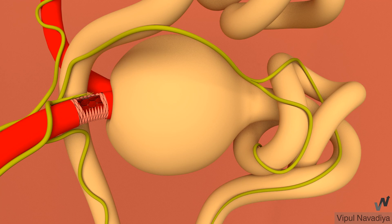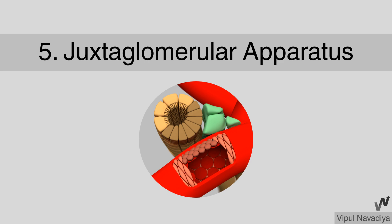So that was the nerve supply — that's it for this video. In the next video, we will see the juxtaglomerular apparatus. Thank you.